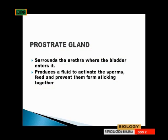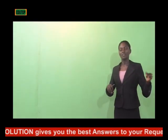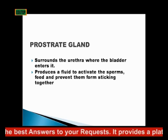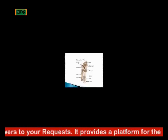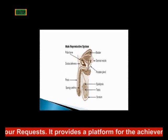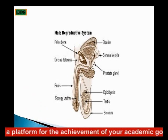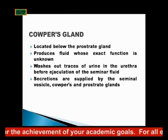The prostate gland surrounds the urethra where the bladder enters it. It produces a fluid to activate the sperm, feed them, and prevent them from sticking together. So the prostate gland secretes a fluid that activates the sperm, feeds the sperm, and also prevents them from sticking together.